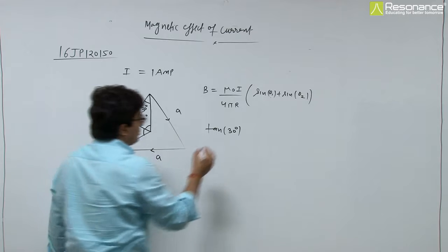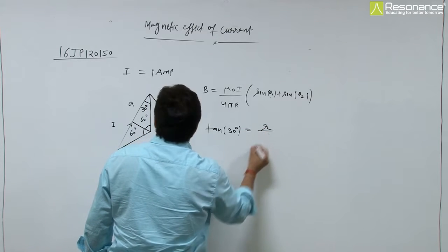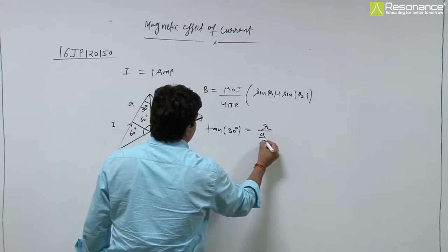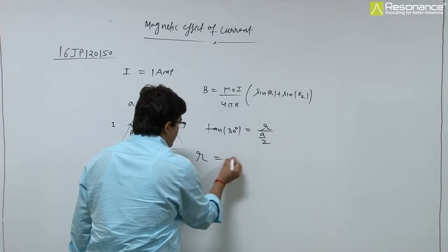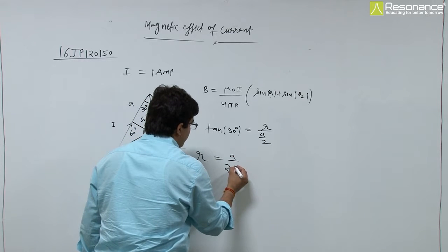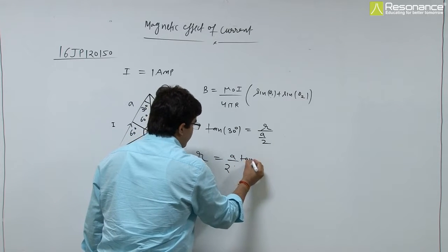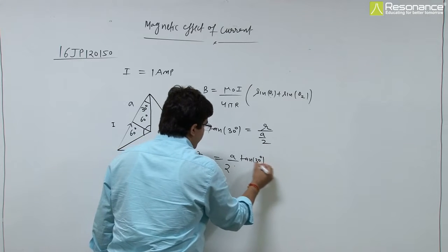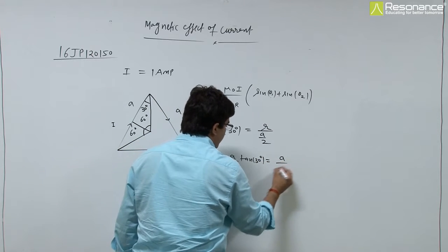tan 30° equals r divided by a/2. So r equals a/2 times tan 30°. Since tan 30° is 1/√3, we get r = a/(2√3).